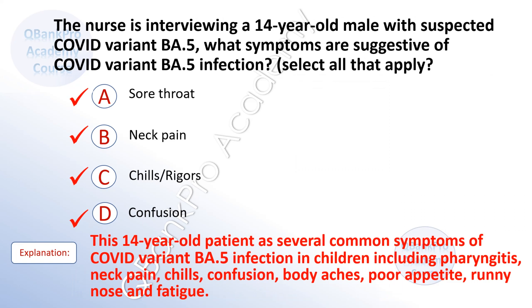This 14-year-old patient has several common symptoms of COVID variant BA5 infection in children, including pharyngitis, neck pain, chills, confusion, body aches, poor appetite, runny nose, and fatigue.